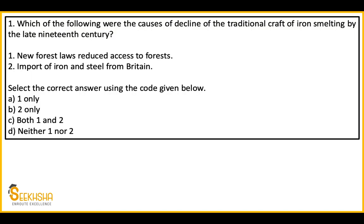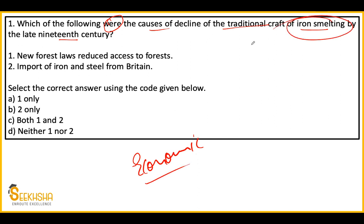The first question is: which of the following were the causes of decline of the traditional craft of iron smelting by the late 19th century? This is a straightforward question on economic history. The question asks what caused the decline of traditional iron smelting in the late 19th century. Two causes are given: one, the British government and English East India Company introduced new forest laws which reduced access to forests for traditional crafters.